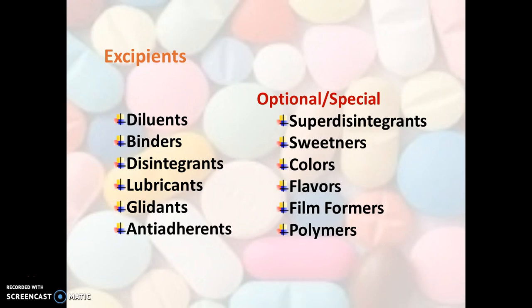The basic essential excipients used during the manufacturing of tablets are diluents, binders, disintegrants, lubricants, glidants, and anti-adherents. In addition, there are various optional or special excipients used in varieties of tablets other than conventional tablets, such as super disintegrants, sweeteners, colors, flavors, film formers, and polymers.